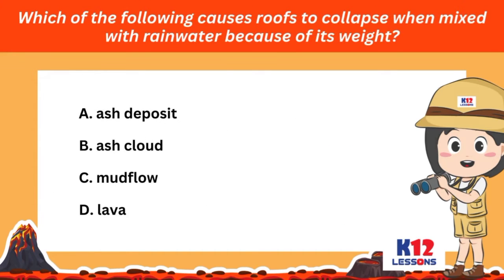Which of the following causes roofs to collapse when mixed with rainwater because of its weight? A. Ash deposit. B. Ash cloud. C. Mud flow. D. Lava.